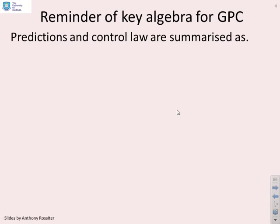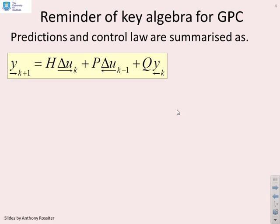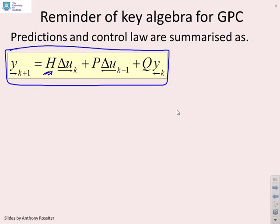Now, the key algebra that's needed in order to do GPC. First, you have to get the prediction matrices and we've summarized those in this box here. So you need to find the matrix H, the matrix P and the matrix Q.